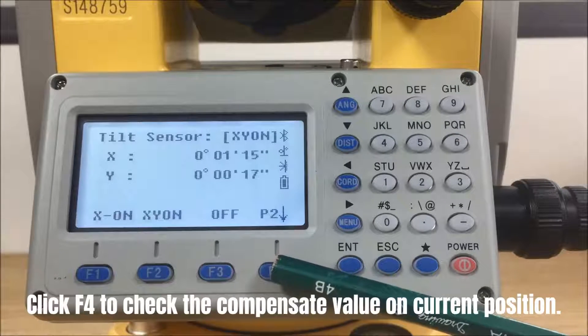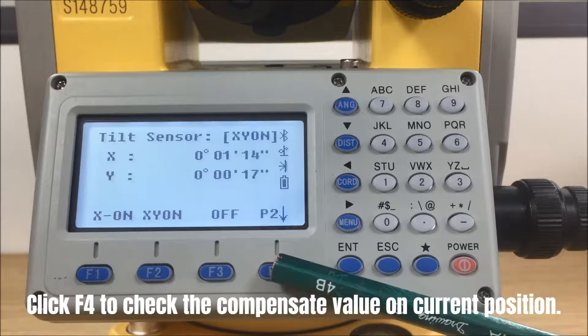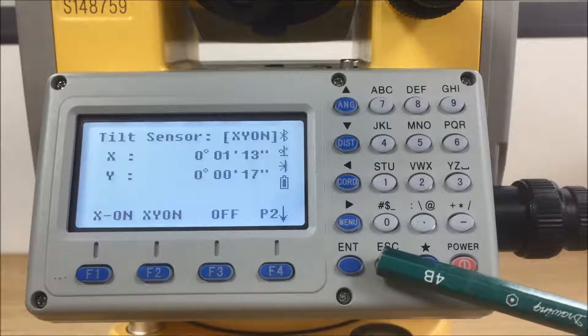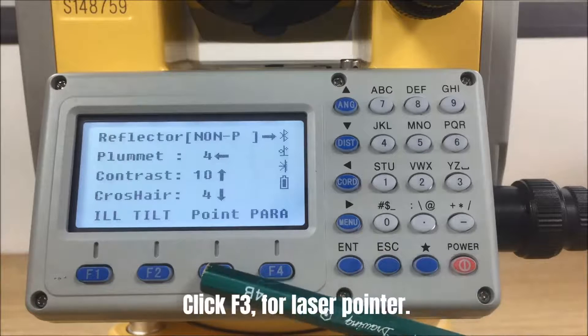Click F4 to check the compensate value on current position. F3 is for laser pointer.